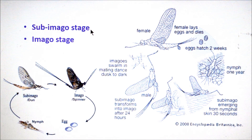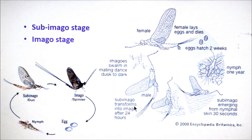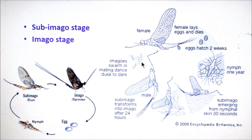This is called the sub-imago stage, meaning the body is covered with fine hairs and legs and cerci are not well developed. The sub-imago stage transforms into the imago stage after 24 hours — wings become transparent and legs and cerci are well developed. Then mating takes place and the female again lays eggs in fresh water.